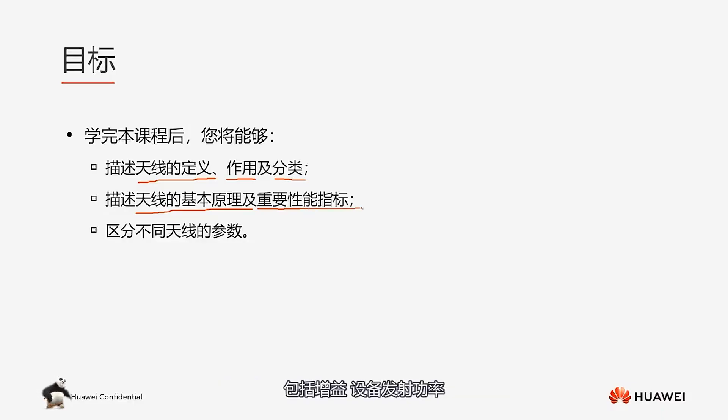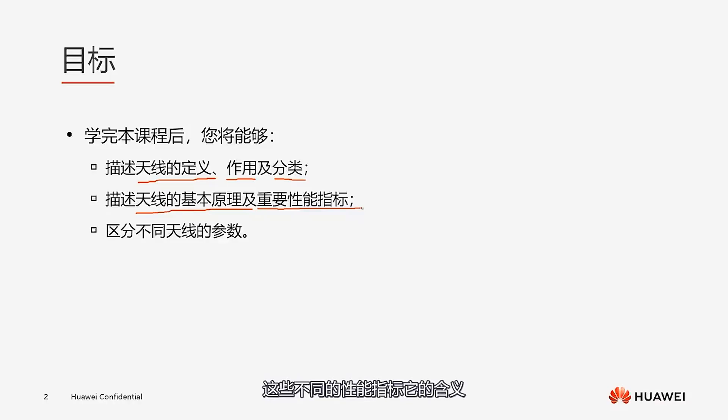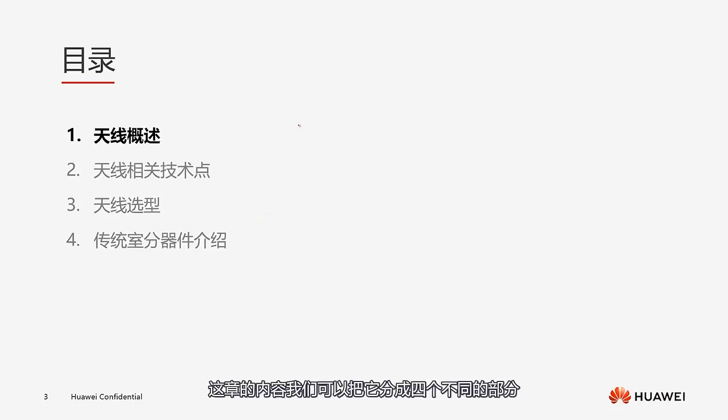Regarding antenna directionality and polarization mode, we should be able to state some important performance indicators, including gain, transmission power of the device, beam width, down tilt angle, and others. We need to clearly understand the meanings of these different performance indicators, their units, and what values indicate that antenna performance is good. We need to be able to differentiate these various antenna parameters.